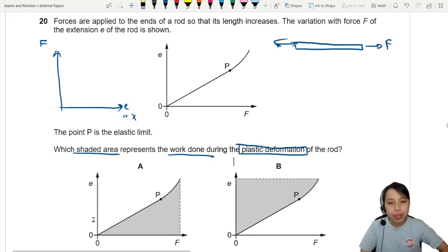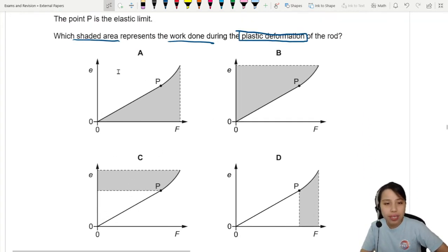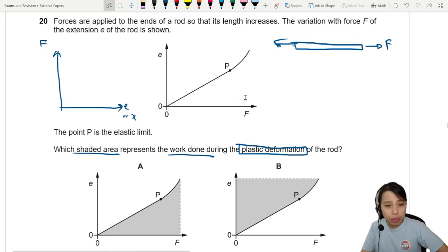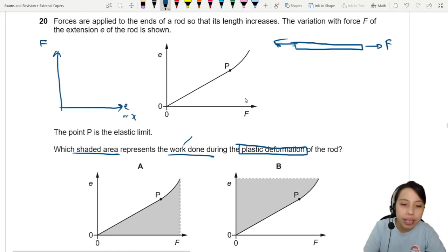First thing to point out when you look at all these choices is why the area sometimes is down here, sometimes like this. Because work done is known as area under the graph, or a better way to talk about it is the area between the curve and the extension axis.